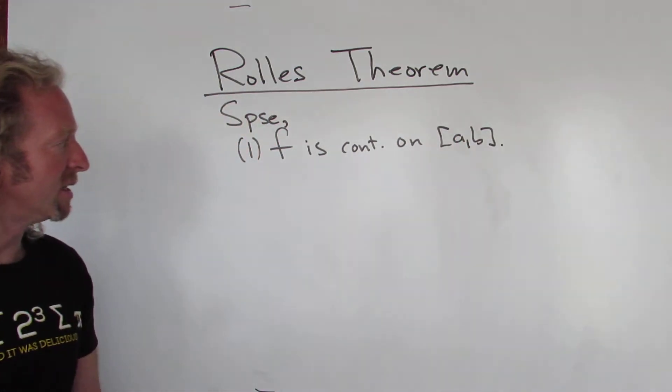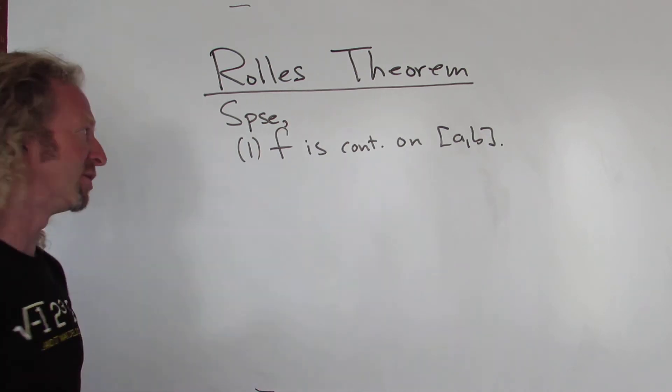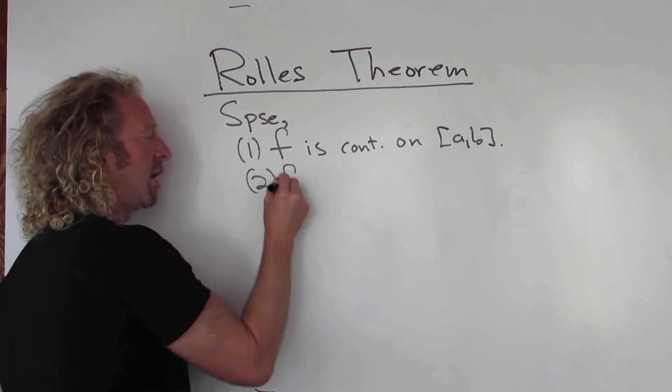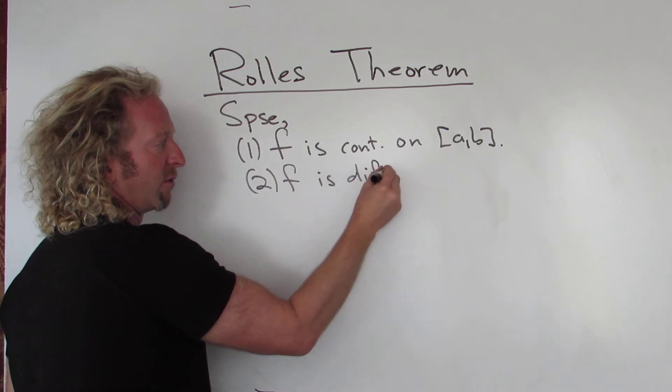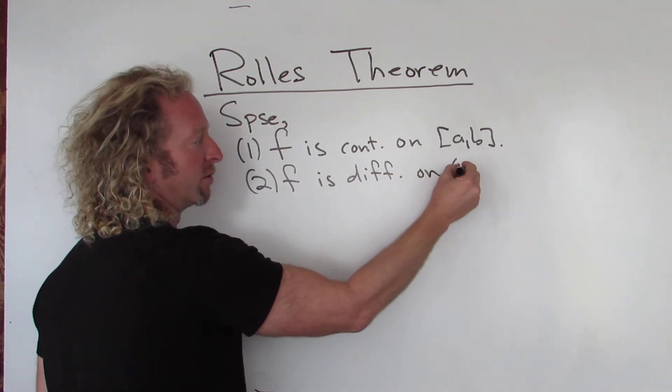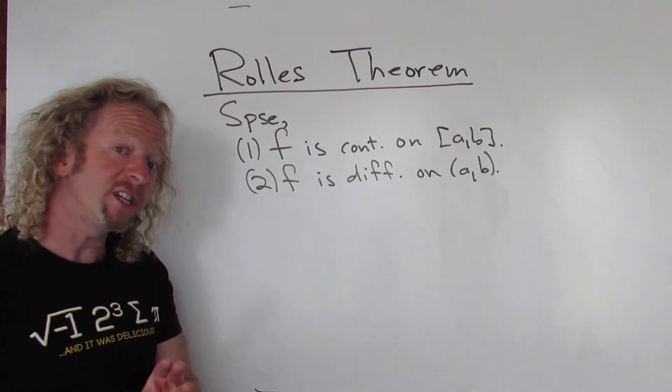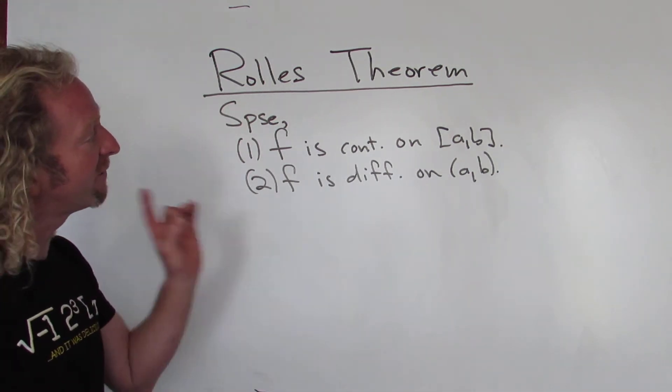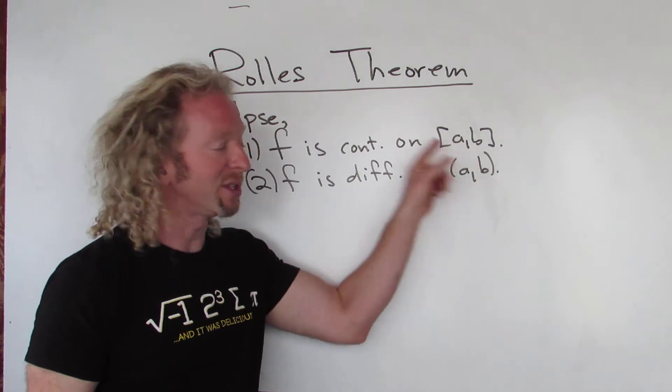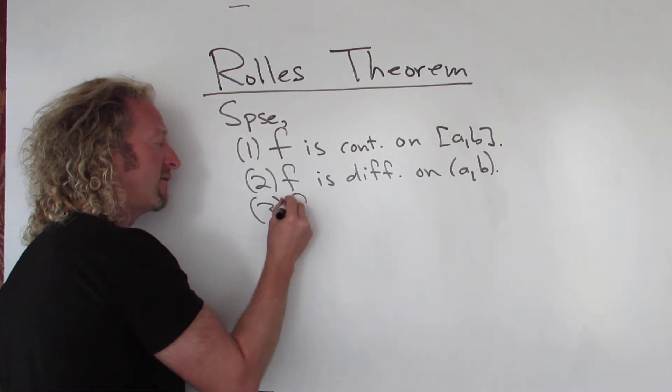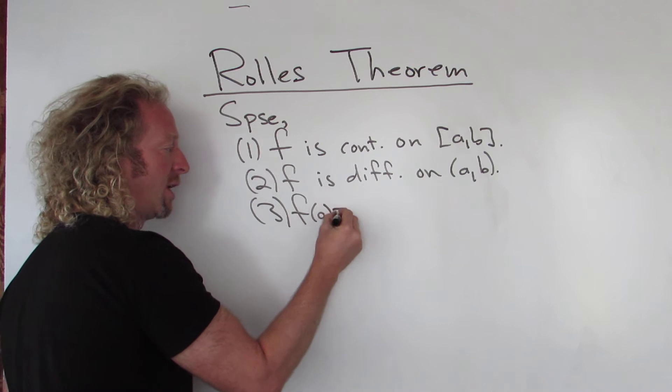Second condition is that it's differentiable on the open interval. So f is differentiable on the open interval (a,b). Third condition is that the function values at the endpoints are the same. So f(a) is equal to f(b).